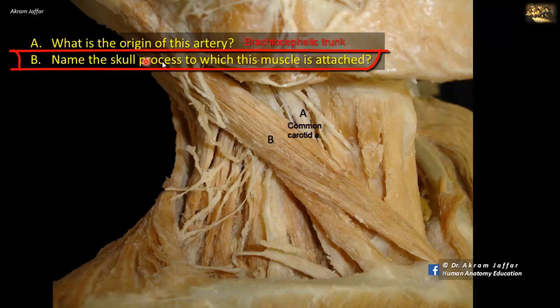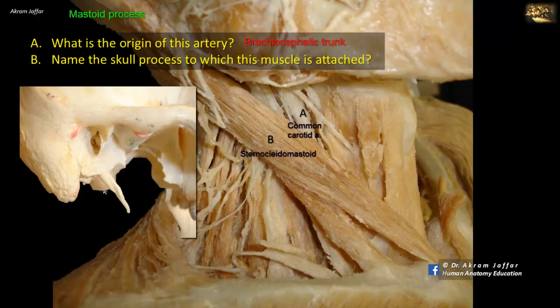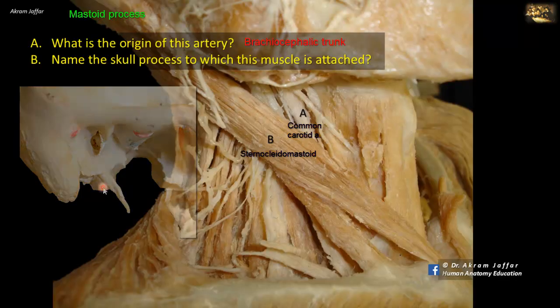Name the skull process to which this muscle is attached. The muscle here is the muscle of the neck that divides the neck into anterior and posterior triangles — it is the sternocleidomastoid muscle. You can see the origin of the muscle from the sternum and clavicle, and then it is attached to the mastoid process of the temporal bone, hence the name sternocleidomastoid.